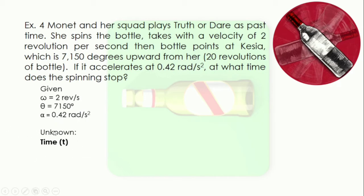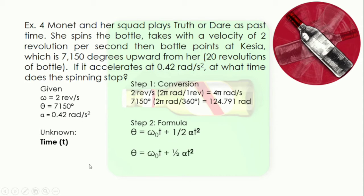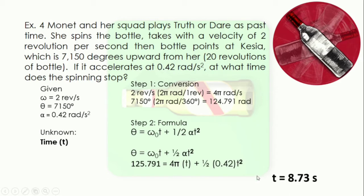We want to find at what time the spinning of the bottle stops. Since revolution per second does not correspond with the other units, we convert revolutions into radians, and 7,150 degrees also into radians. Using the formula delta equals omega-naught times T plus one-half alpha T squared, and plugging in the values, we find that the time is 8.73 seconds. At 8.73 seconds, the bottle stops and points at Keisha.